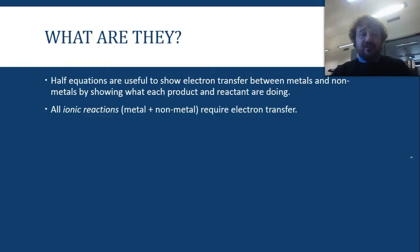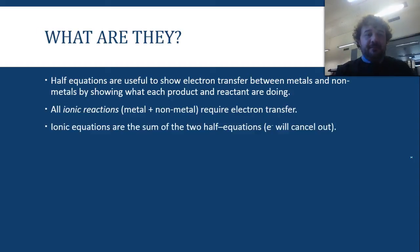So, all ionic reactions require electron transfer. They just do, so metal plus non-metal, boom, off you go. Now, ionic equations are the sum of two half equations. So we put them together, and we cancel out the electrons, because they'll be the same on either side, they need to balance. And then we'll have our ionic equation.